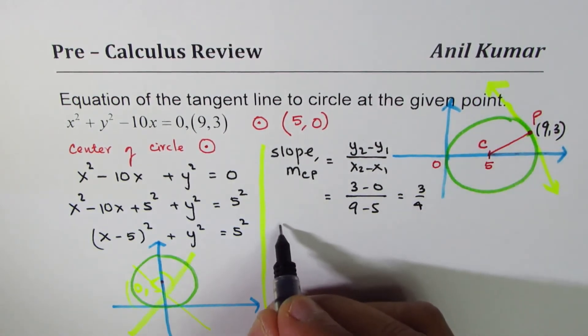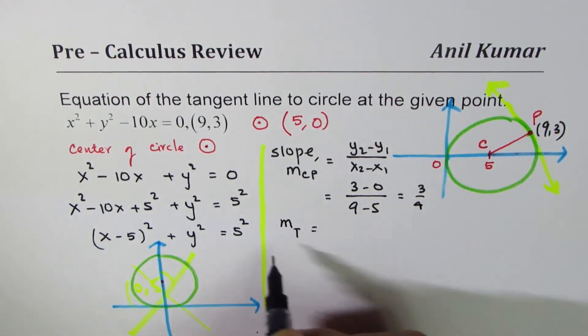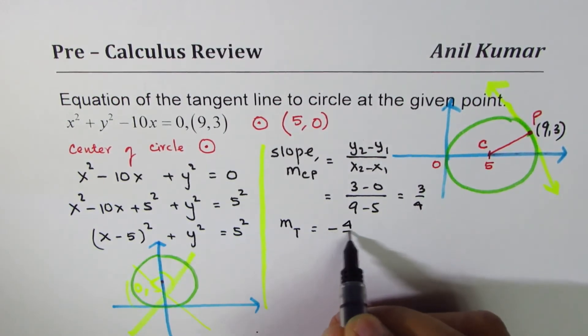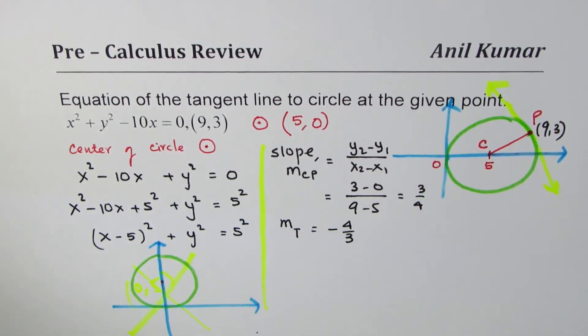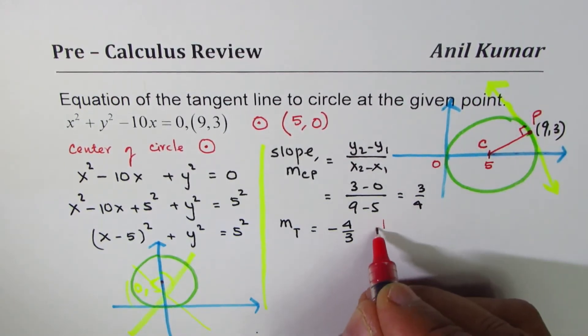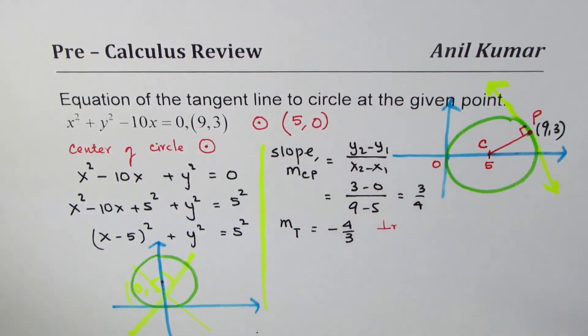How about slope of tangent line? Let's call it m_T. Since it is perpendicular, it is going to be negative reciprocal. Since it is perpendicular, they are at right angles, so it is negative reciprocal.